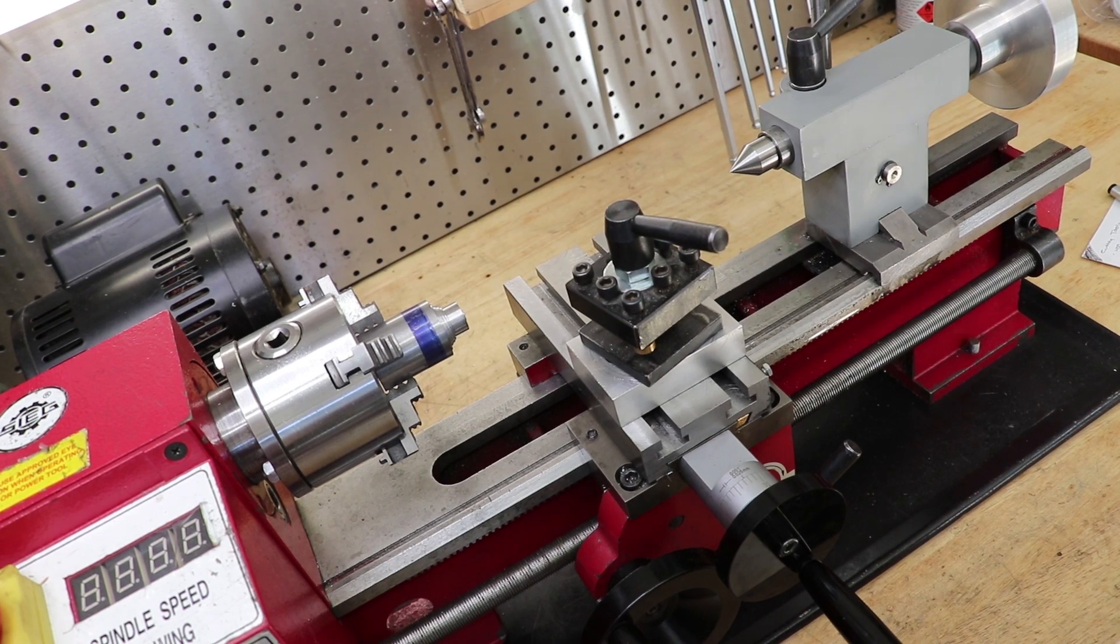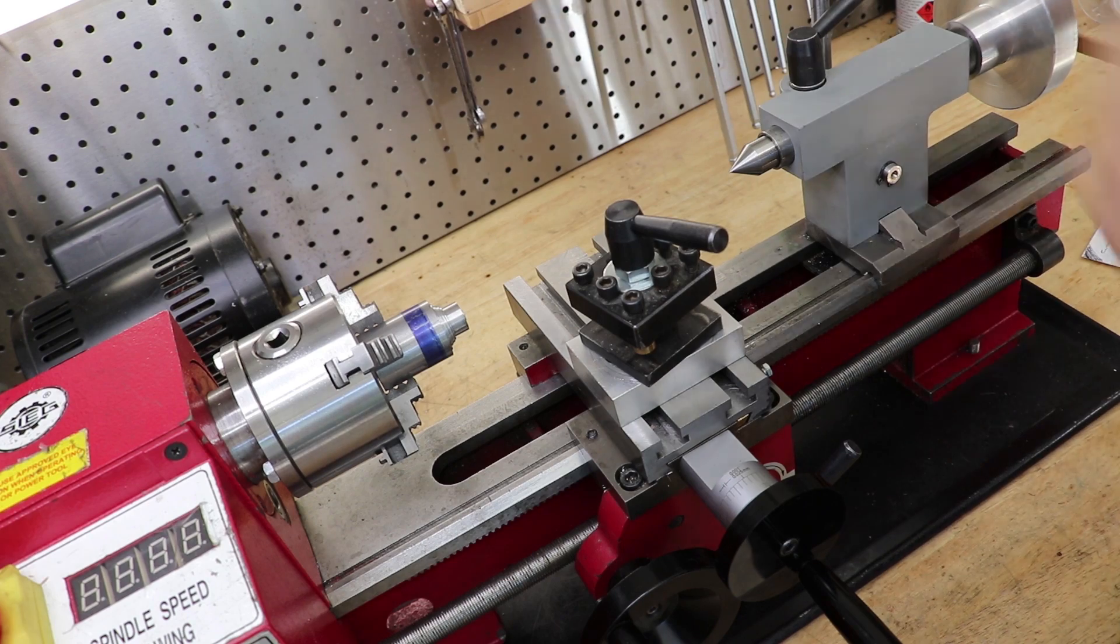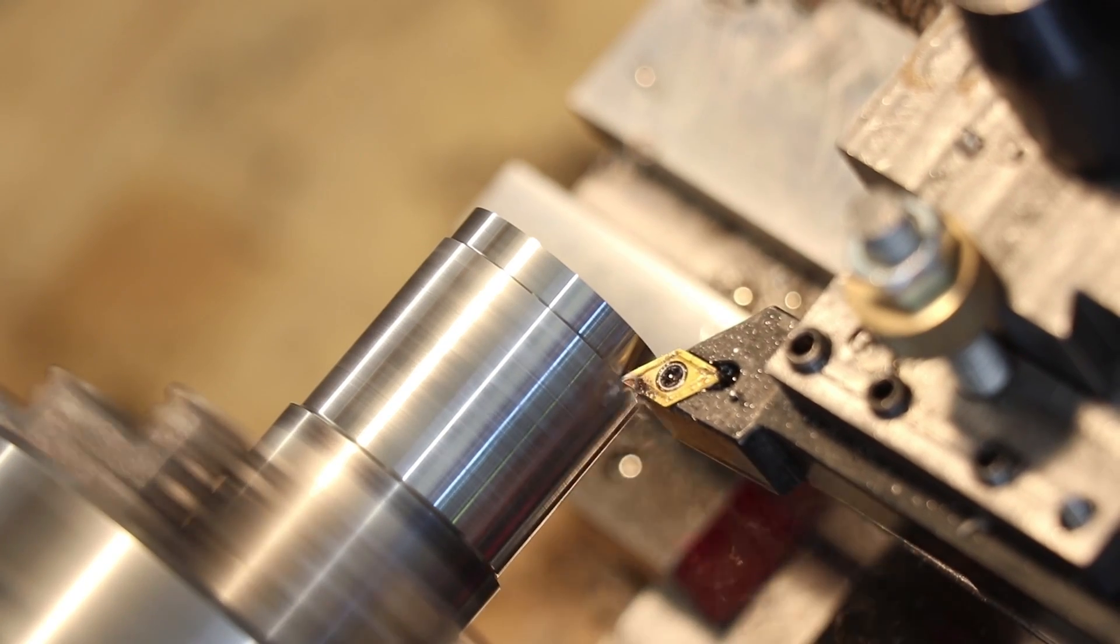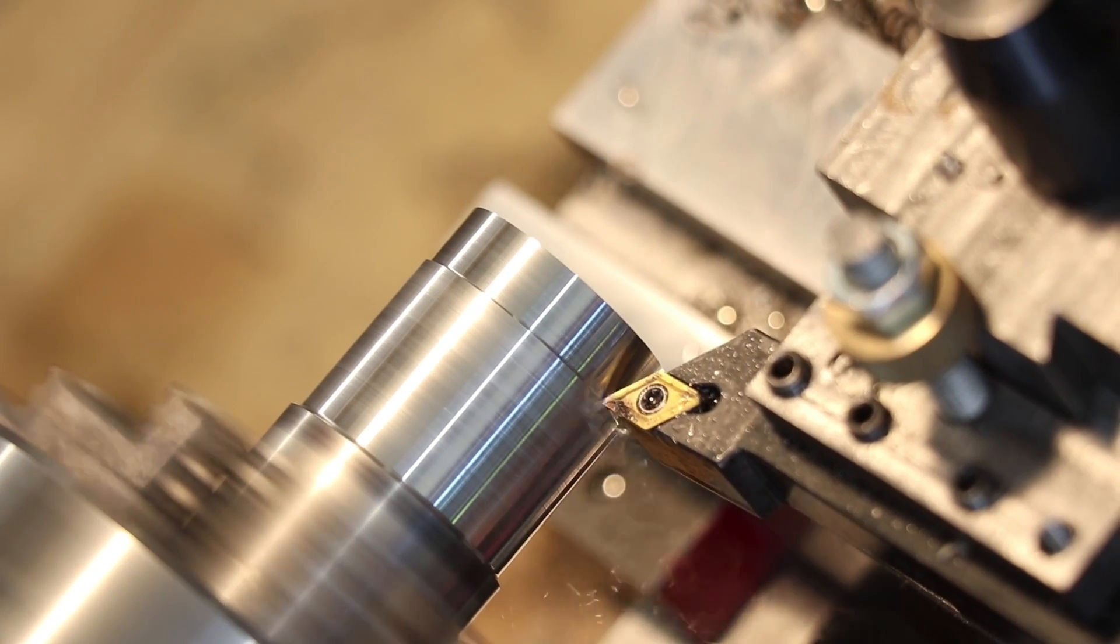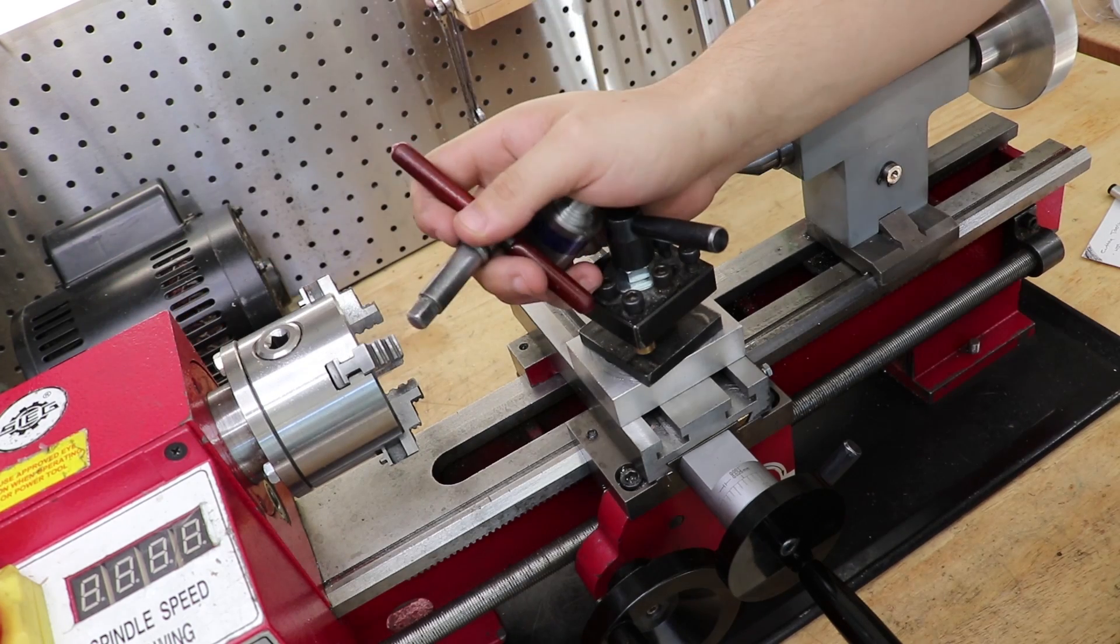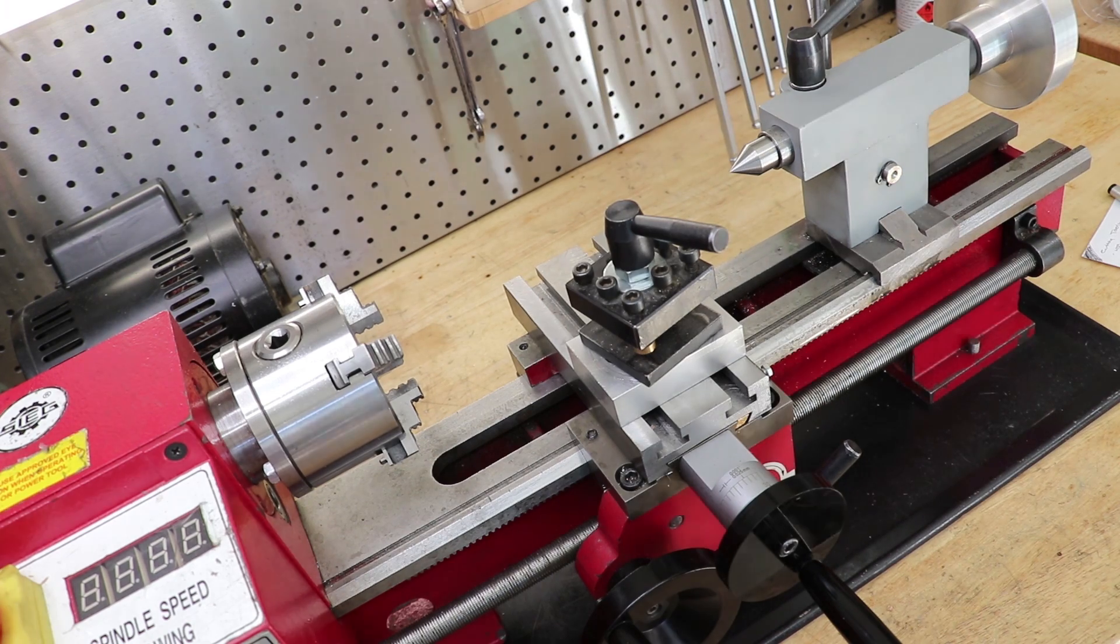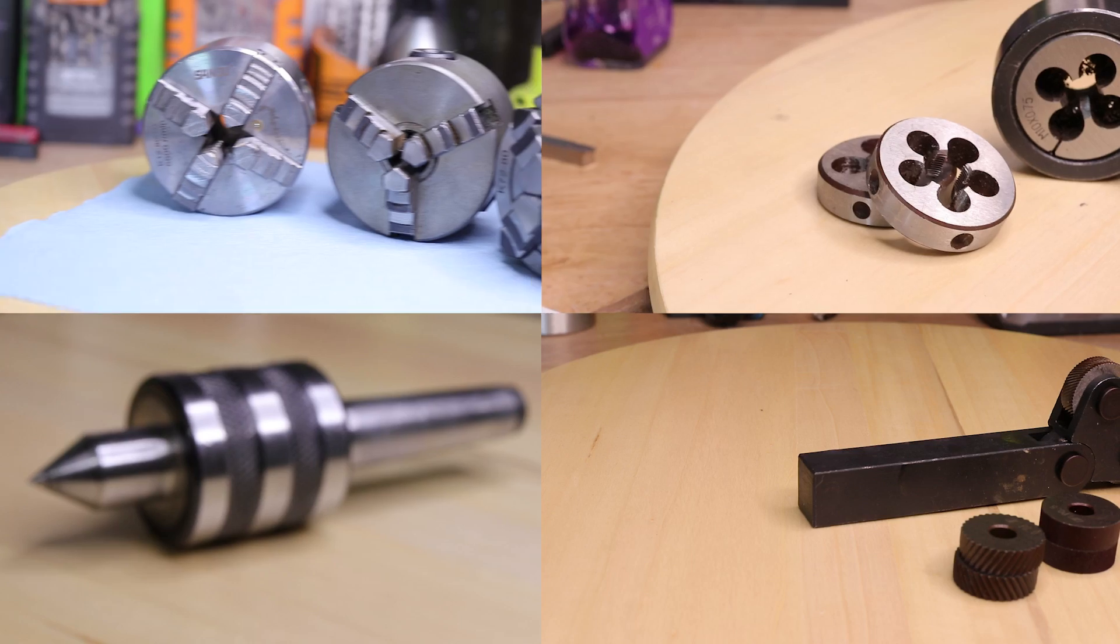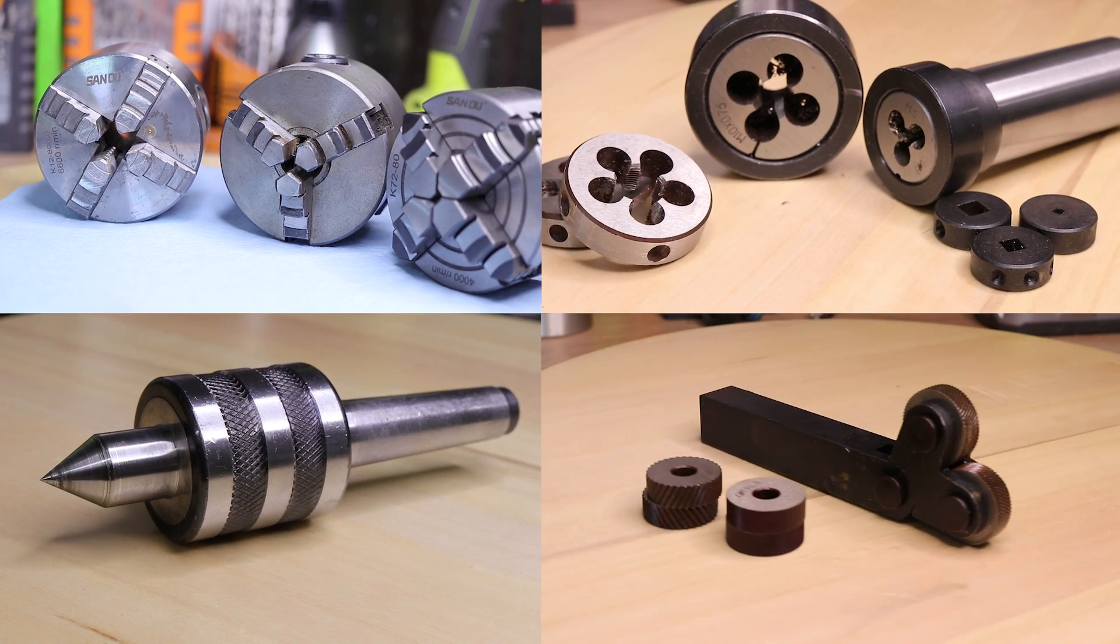One thing I get asked a lot about hobby machining is the cost of tooling to actually use the machines. You can buy a mini lathe for about $700 to $800 now, but they don't typically come with any tooling, and it's pretty easy to imagine that tooling probably doesn't come cheap. The saying goes you'll probably end up spending what you paid for your lathe in tooling alone.